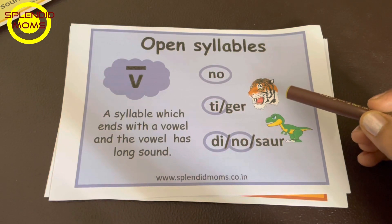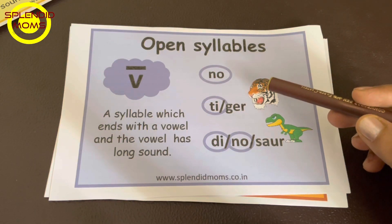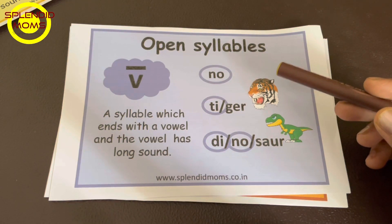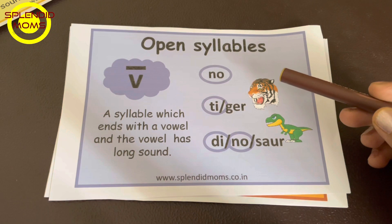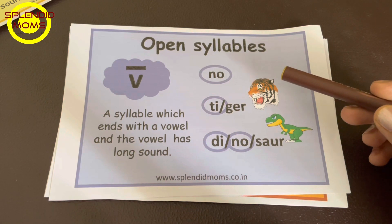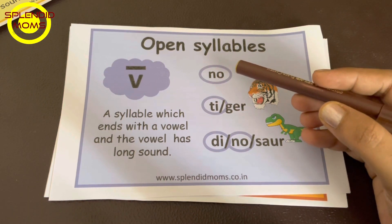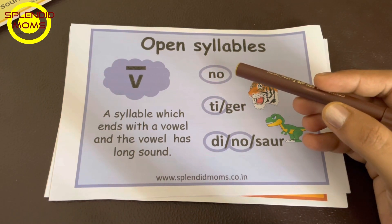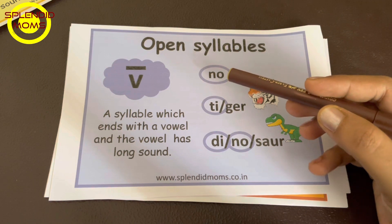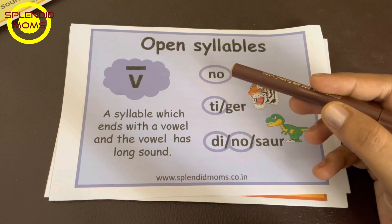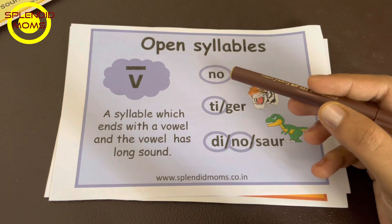Open syllable. An open syllable is a syllable which ends with a vowel with a long sound, like 'no.' Here, the O is taking a long sound — no.